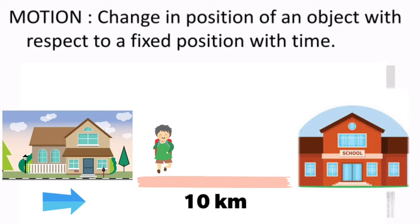In this picture you can see there is a boy who goes to school every day. He starts from his home and travels 10 kilometers to reach his school. Home and school are fixed positions, and the object is the school boy. The time taken for traveling this 10 kilometers distance is 10 minutes.